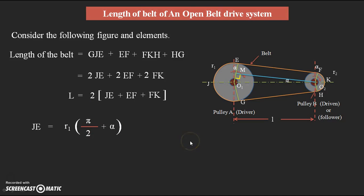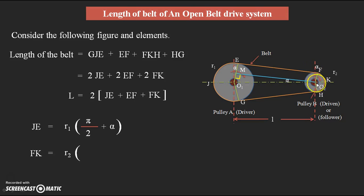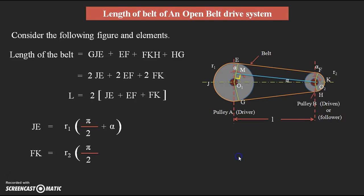Similarly, for arc FK: the radius is r2. Here, point F lies before the vertical line, so we subtract alpha from 90°, giving angle (π/2 − α). Therefore: FK = r2 · (π/2 − α).